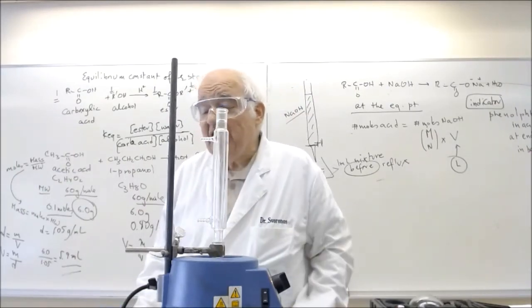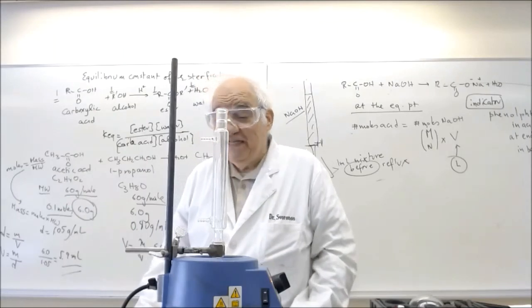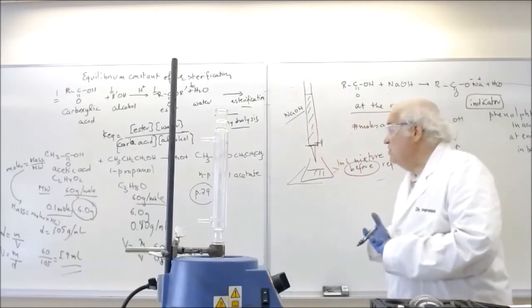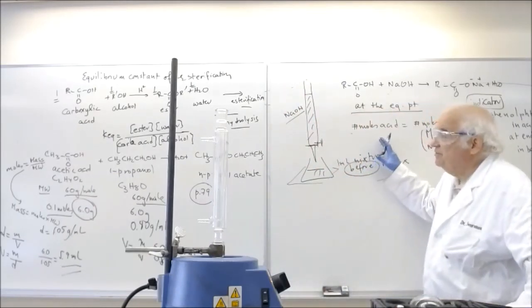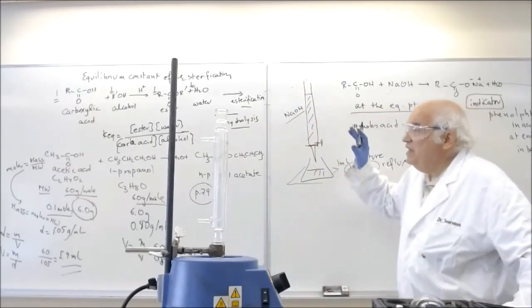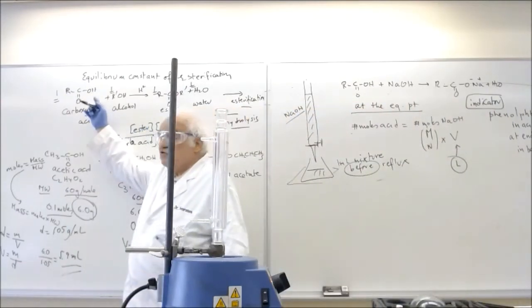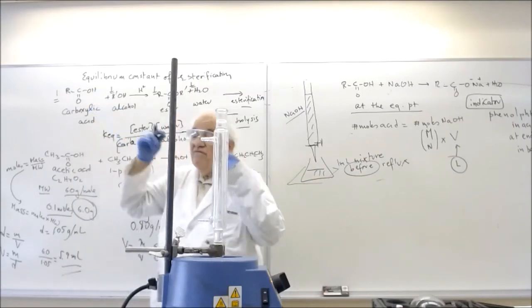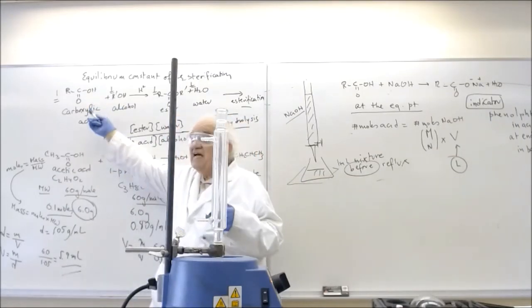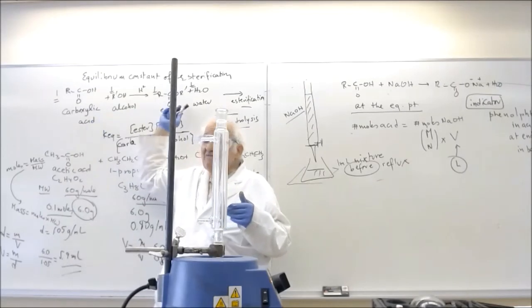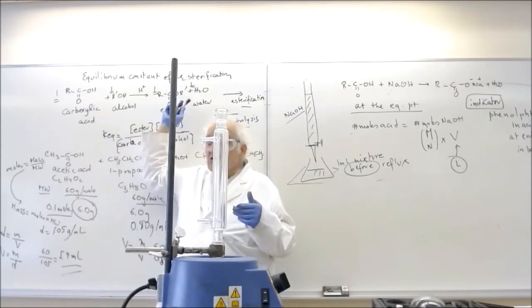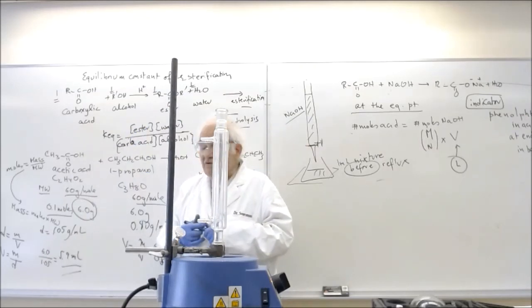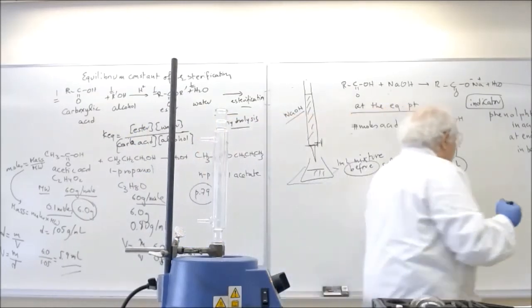And when you cool that mixture, you will take one milliliter again, with the same pipette that you have already cleaned up and dried out, and you perform another titration. Now remember now, when we did the first titration, we used the amount of acid that was present in one milliliter of that solution. When we finish up with the reflux, some of that acid would have been consumed, because you created ester. The ester was not there to begin with.